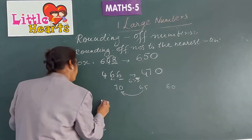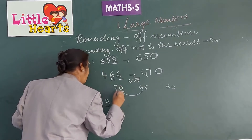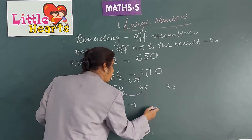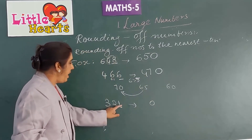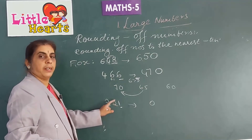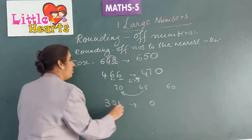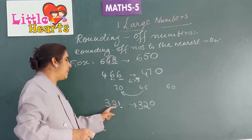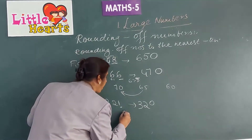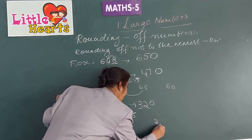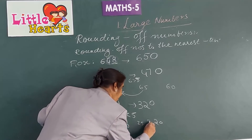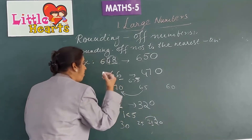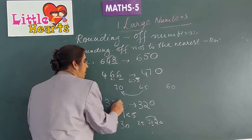Now, 321. Round it to the nearest 10. The first step is to underline the ones place digit and put 0 in the ones place. Now, 1 is less than 5, so there will be no change in the tens place digit — leave it as it is. The answer is: 321 is rounded to 320. As 21 is nearer to 20 than 30, and 1 is less than 5, 321 is rounded to 320.